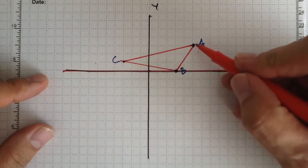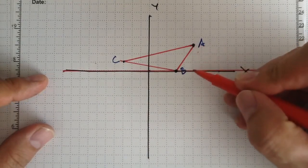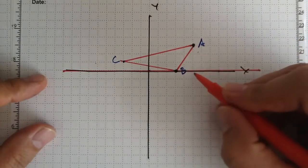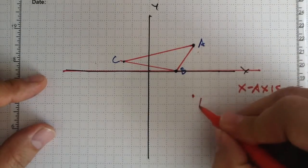So if I want to reflect A, basically what I want to do is go down to the line of reflection and then go that many spaces, 1, 2, 3 spaces, in the opposite direction. And so we would call this A prime.